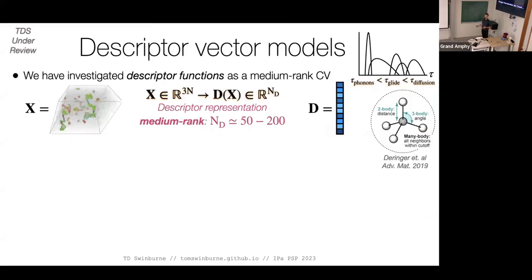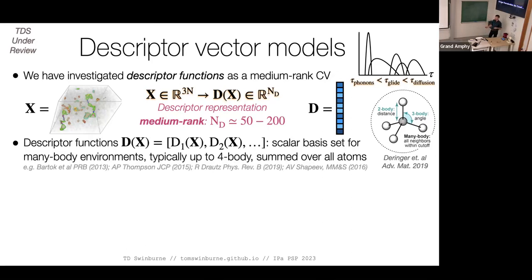Designing collective variables — reducing to one or two dimensions — is very challenging. So our approach is a medium-rank representation of around 50 to 100 dimensions. We represent atomic environments in a space invariant to permutation and rigid operations with a rank of around 200. This uses descriptor functions that are really coming out of representation learning for atoms. For example, radial distances between all atoms are a very good descriptor — averaged over the system, this is a scalar invariant to identical permutation. More generally, summing over neighbors — invariant to permutation of identical atoms — any function of two-body, three-body angles, or many-body generalizations produces a representation of atomic environments.